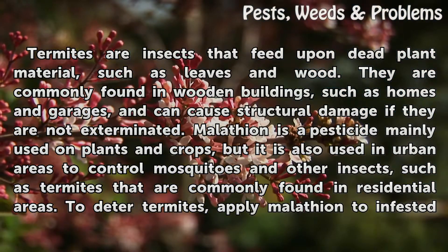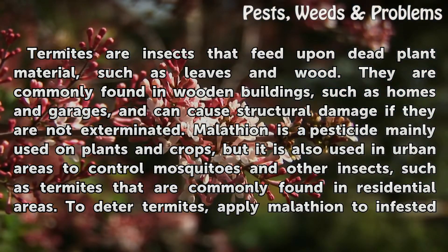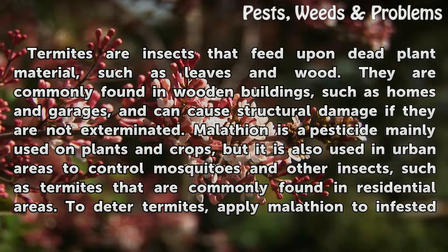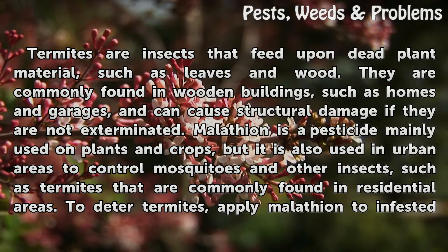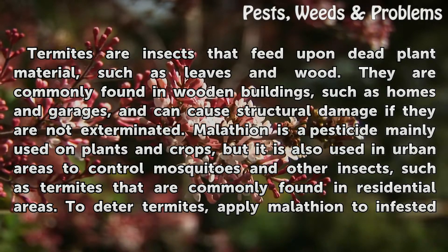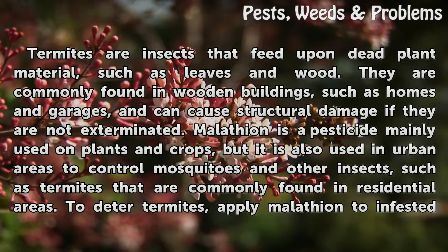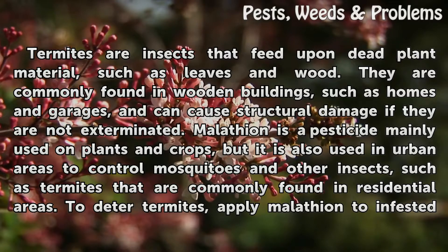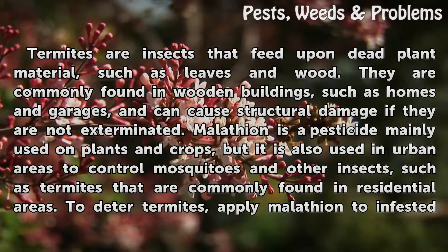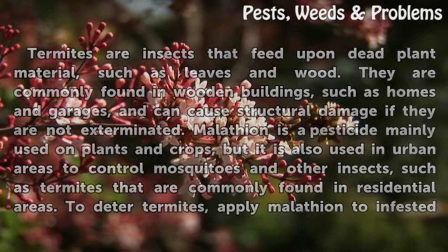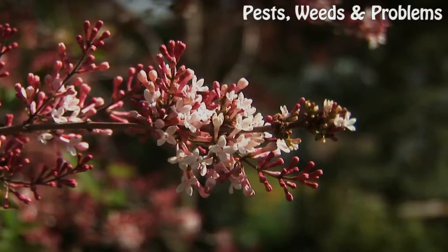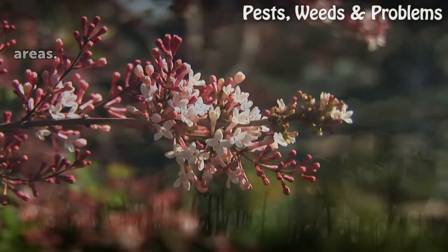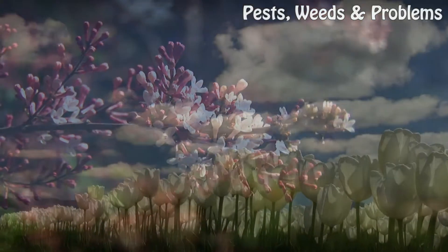Malatheon is a pesticide mainly used on plants and crops, but it is also used in urban areas to control mosquitoes and other insects, such as termites that are commonly found in residential areas. To deter termites, apply Malatheon to infested areas.